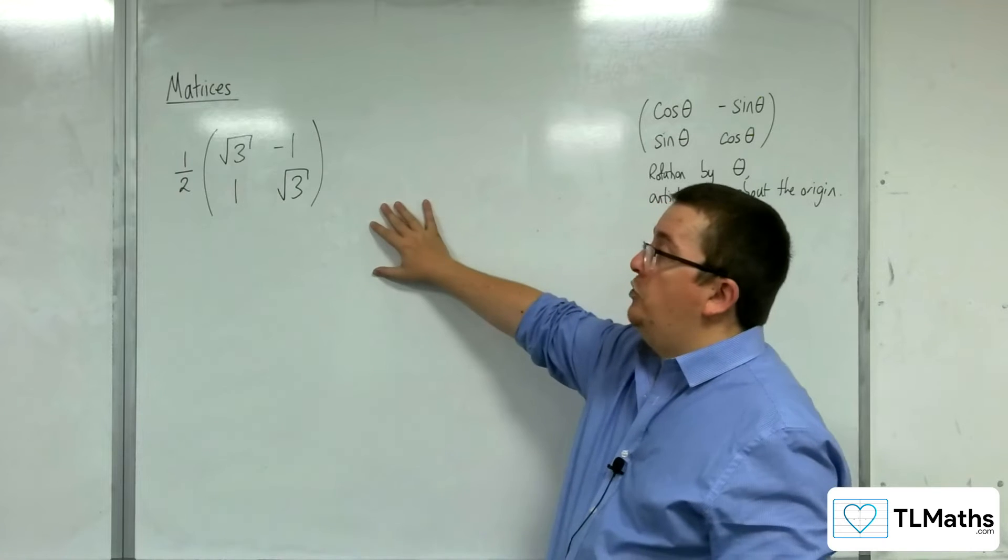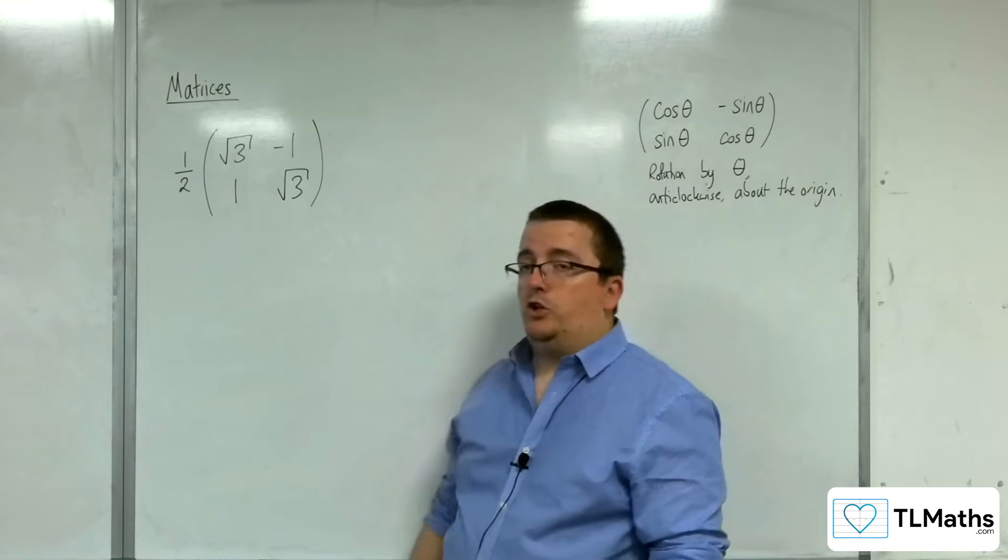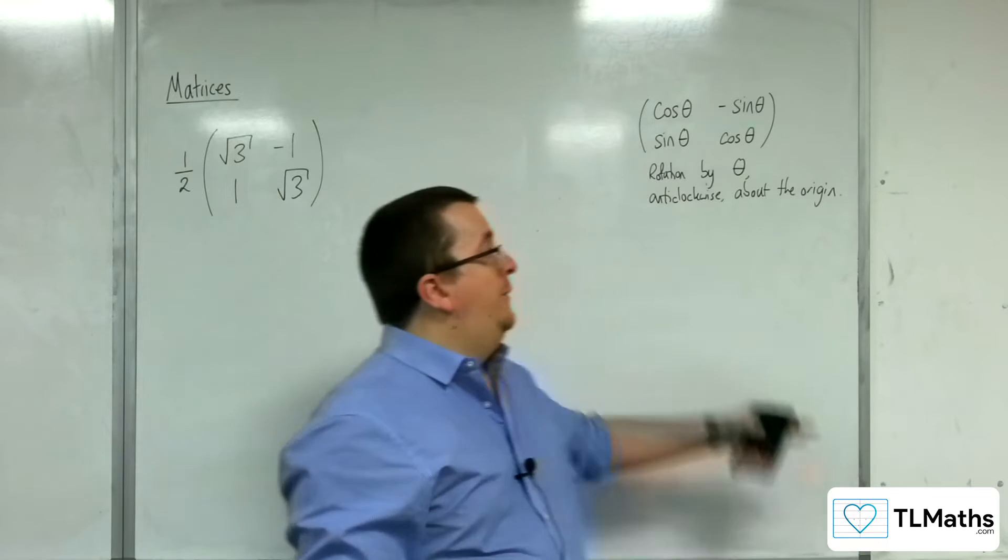So let's say we were given this matrix, we were told it was a rotation matrix, it is of this form.